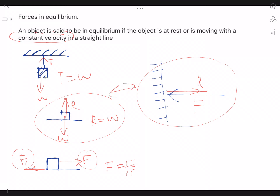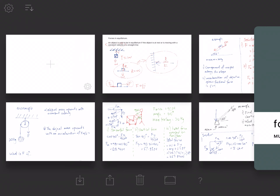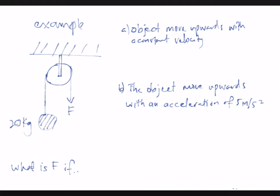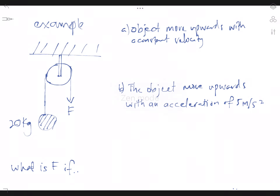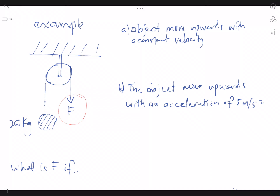Now let us look at an example. We have a pulley, and there is an object with a mass of 20 kg hanging there. There is a force on the other side pulling it. The question asks: what is F? There are two parts to this question — the first is when the object moves upward with constant velocity.